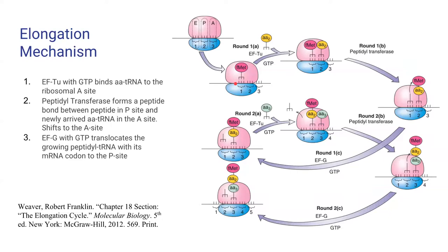EF-TU, along with GTP, binds aminoacyl-tRNA to the ribosomal A site. Then, a peptidyl transferase forms a peptide bond between the peptide in the P site and the newly arrived aminoacyl-tRNA in the A site, and therefore shifts it to the A site.